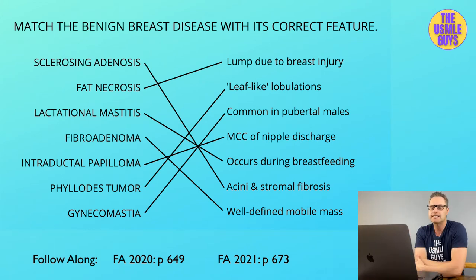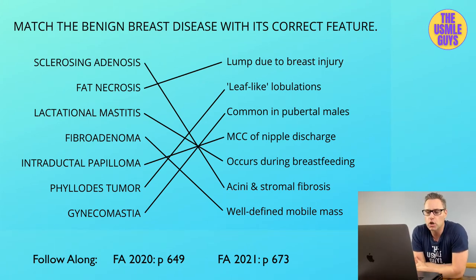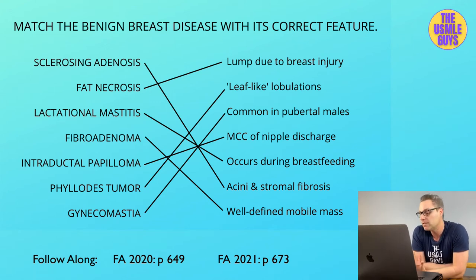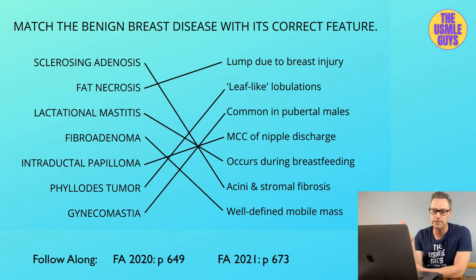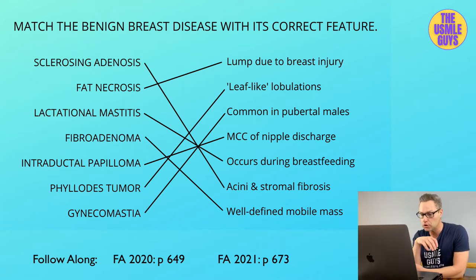Next is the phyllodes tumor, which is a larger lesion composed of connective tissue and cysts with leaf-like lobulations. You're most likely going to see this in someone in their 50s. Just like the intraductal papilloma, this does have the potential to become malignant.